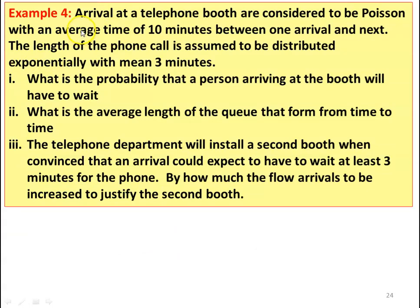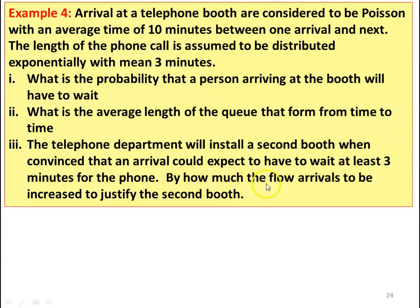Example number 4. Arrivals at a telephone booth are considered to be Poisson with an average time of 10 minutes between one arrival and the next. The length of the phone call is assumed to be distributed exponentially with a mean of 3 minutes. Question 1: what is the probability that a person arriving at the booth will have to wait? Question 2: what is the average length of the queue that forms from time to time? Question 3: the telephone department will install a second booth when an arrival could be expected to wait at least 3 minutes for the phone — by how much must the arrival flow be increased to justify the second booth?